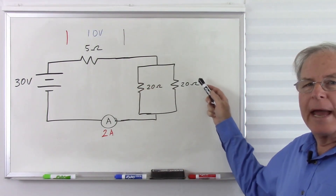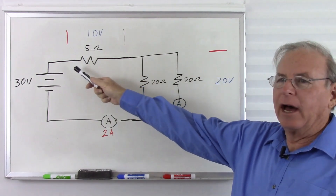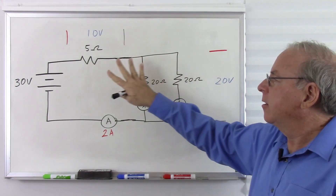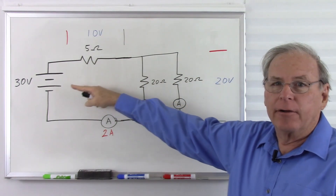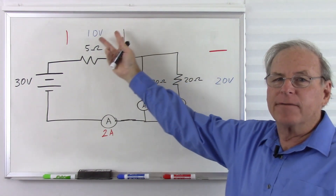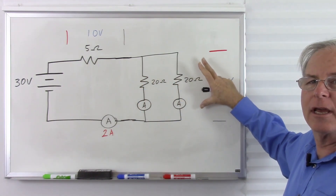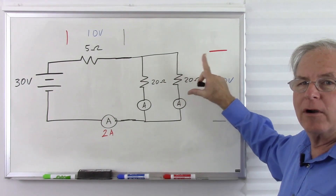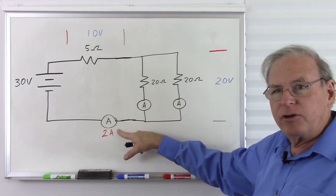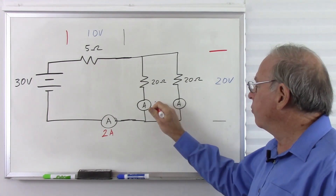Zooming back to the original drawing: 30 volts, 5 ohms, and two 20 ohm resistors in parallel. We do not have the entire 30 volts across these two resistors — the voltage is no longer the same everywhere. We have a third of voltage across the 5 ohm resistor and two thirds across the parallel section, but within the parallel part the voltage is the same: 20 volts and 20 volts. With 2 amps total and two equal resistors, we have 1 amp each.